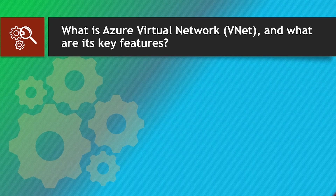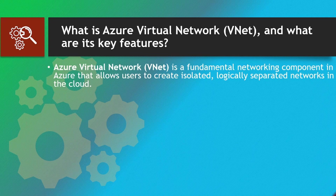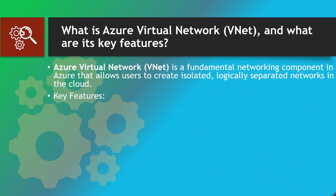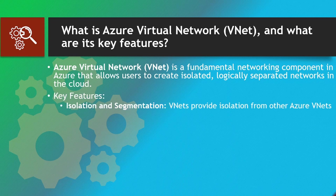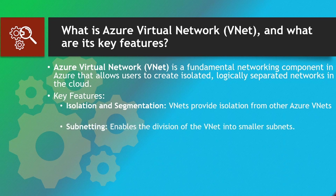First question: What is Azure Virtual Network (VNet) and what are its key features? Azure Virtual Network (VNet) is a fundamental networking component in Azure that allows users to create isolated, logically separated networks in the cloud. Key features include: Isolation and segmentation — VNets provide isolation from other Azure VNets. Subnetting — enables the division of the VNet into smaller subnets.